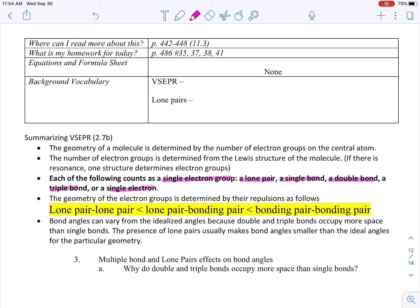The geometry of the electron groups is determined by their repulsions. If I have a lone pair next to a lone pair, their angles are going to be very distorted because they're very repulsive to each other. If I have a lone pair next to a bonding pair, the bond angles will be affected. If I have bonding pairs next to bonding pairs, my angles shouldn't be affected. Bond angles can vary from the idealized angles because double and triple bonds occupy more space, and lone pairs make the bond angle smaller because of the large repulsion of those electrons.